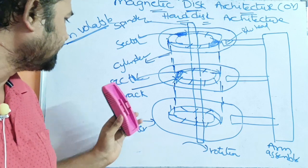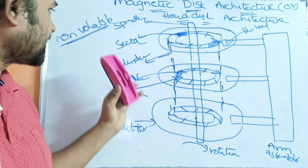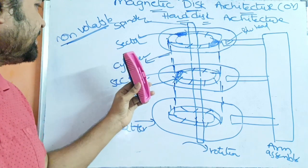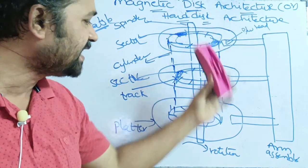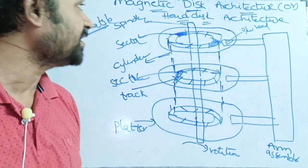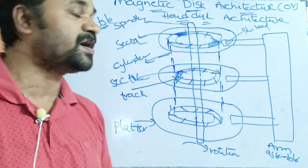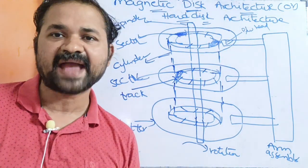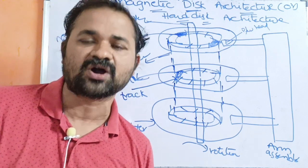So this is about magnetic disk architecture. To summarize, we have: platter, track, sector, cylinder, read-write head, and arm assembly. This is about magnetic disk or hard disk architecture.